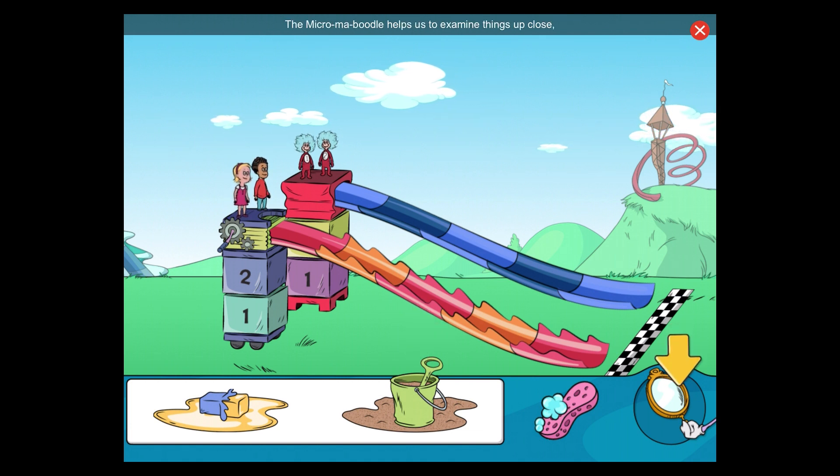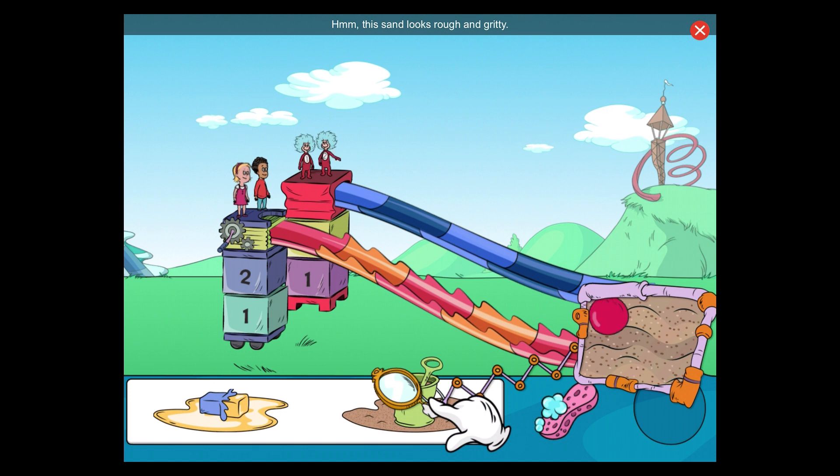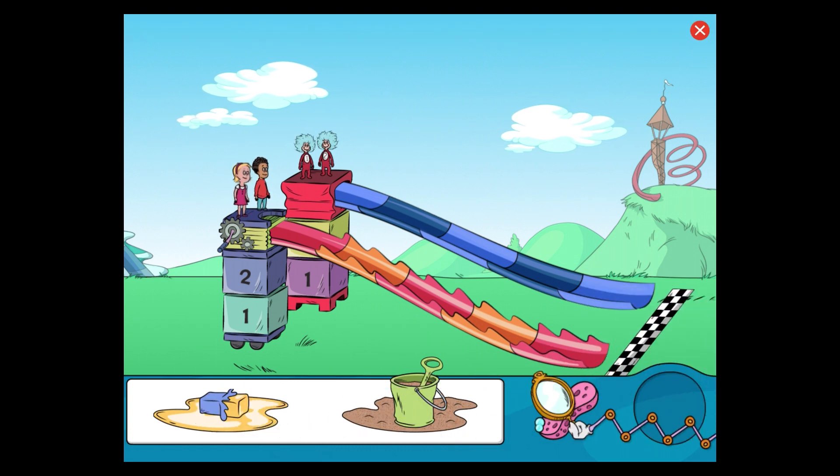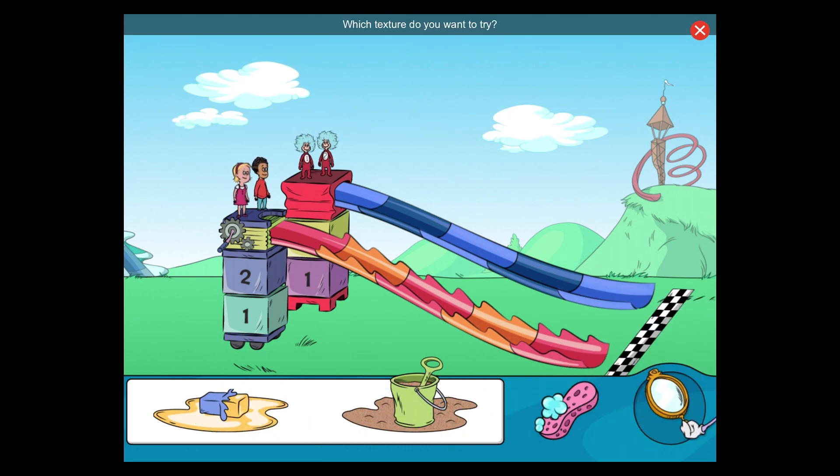The micro-maboodle helps us examine things up close so we can see texture. Hmm. The sand looks rough and gritty. Whoa! This butter looks slick and greasy. Which texture do you want to try?